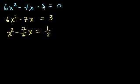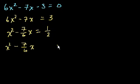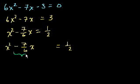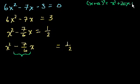We could have made that our first step — divided by 6 right at the start. Anyway, now let's complete the square. We have x squared minus 7/6 x plus something equals 1/2. We have to add something so that the left-hand expression becomes a perfect square. We look at the coefficient, and keep in mind it's minus 7/6. You take half of it and then you square it. Just remember: x plus a squared equals x squared plus 2ax plus a squared. That's all completing the square is based on.